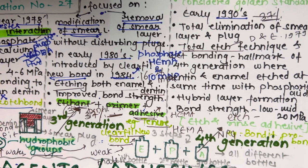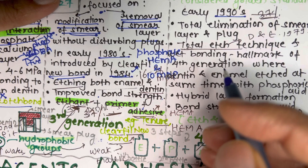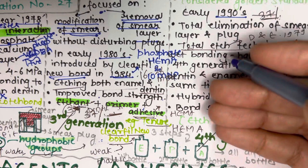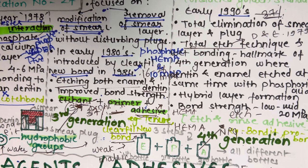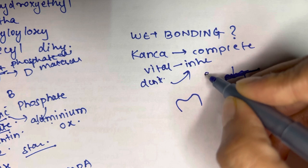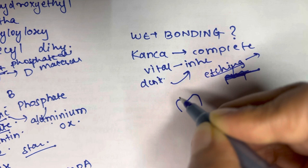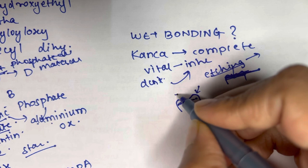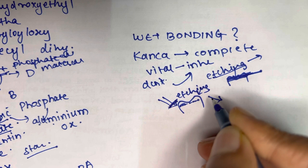This generation is known as etch-and-rinse adhesive, and the technique is called etch-and-rinse or total etch technique. The fourth generation has three steps: application of etch, application of primer, and application of adhesive. No mild conditioner is applied to dentine; the same 37% phosphoric acid etchant is used on both enamel and dentine. Regarding wet bonding, Kanka proved that completely drying the dentine after etching is not clinically recommended, because vital dentine is inherently wet.